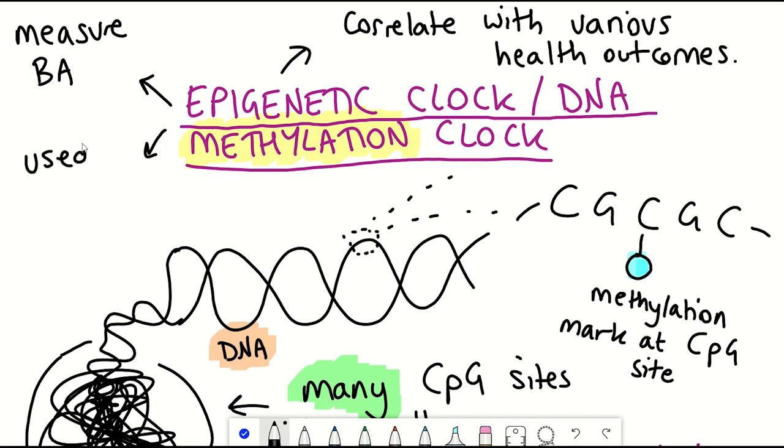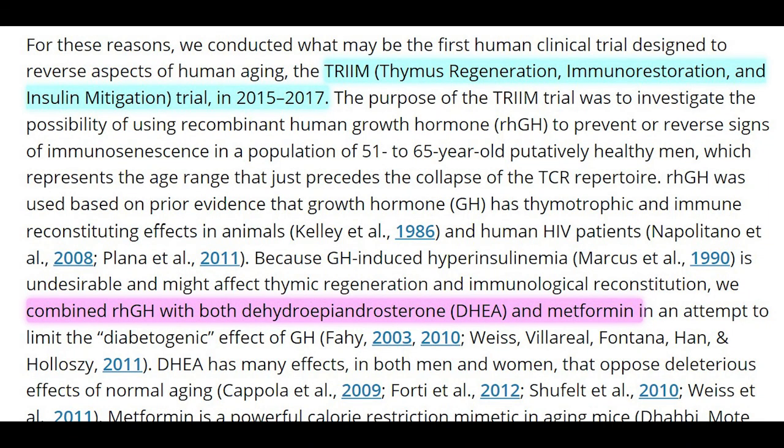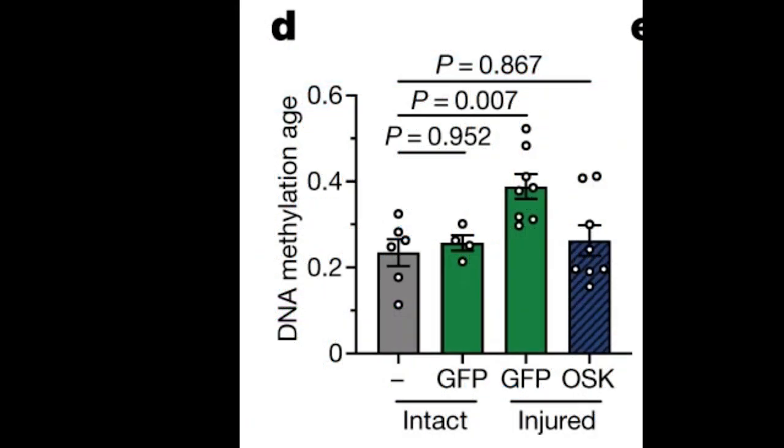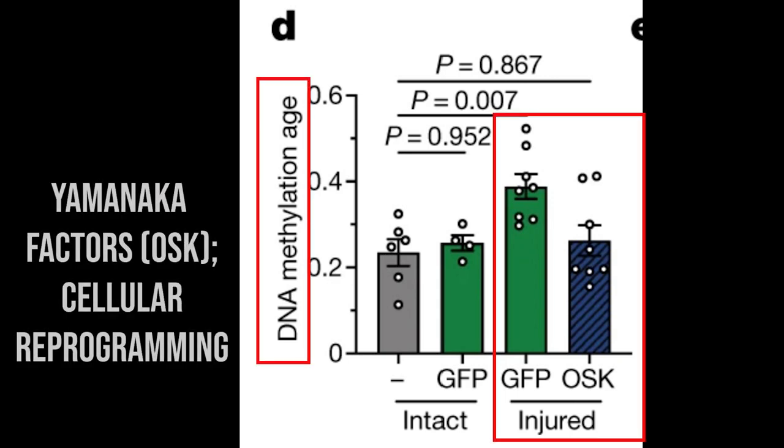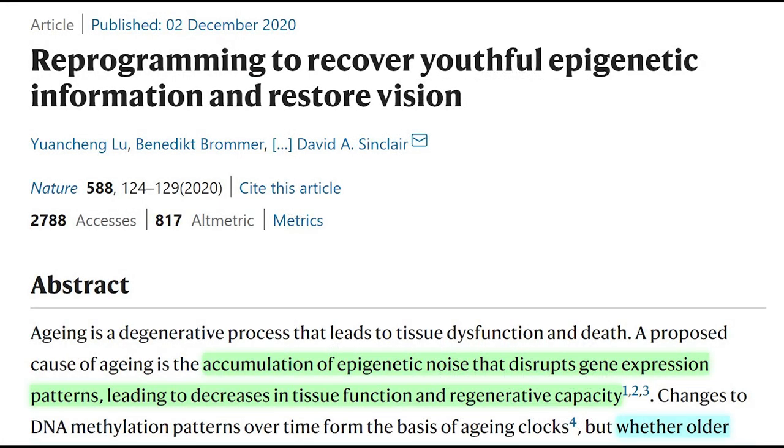Moreover, epigenetic clocks have also been used as evidence to show reversal of age. This has been seen at least twice already, firstly in the TRIIM study that showed that the DNA methylation age was reversed when patients were given a combination of human growth hormone, DHEA and metformin. And the other case in which DNA methylation was used was when evaluating the cellular reprogramming of retinal cells treated with the Yamanaka factors, described in this Nature publication from the Sinclair lab last year.